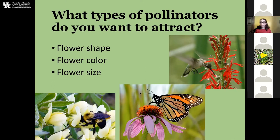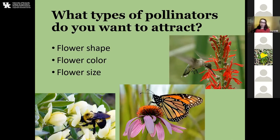For bees, they like to have either that landing platform they can land on, crawl over, and collect pollen and nectar from, or they like to have something they can hang on to — like you see with the pea flowers. This one happens to be the wild white indigo, where they can hang on, shove their head in, and do their thing if they don't have a nice landing platform.